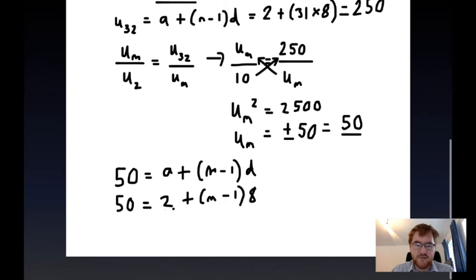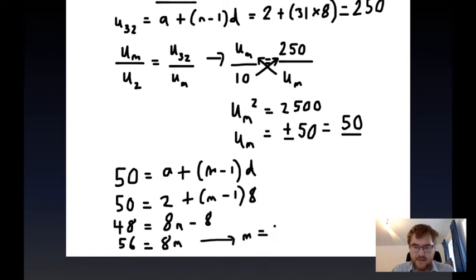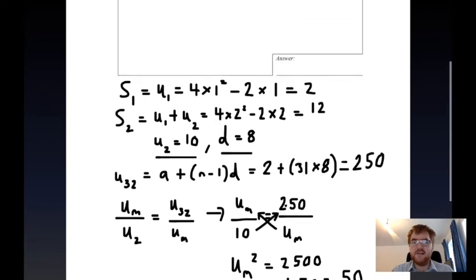Now we've got a linear equation to solve. We bring the 2 over here, so that's 48 is equal to—I'll expand out the brackets—we get 8m minus 8, and then we add 8 on both sides. We get 56 is equal to 8m, and so we then work out that m is equal to 7. It's the seventh term in the arithmetic series.